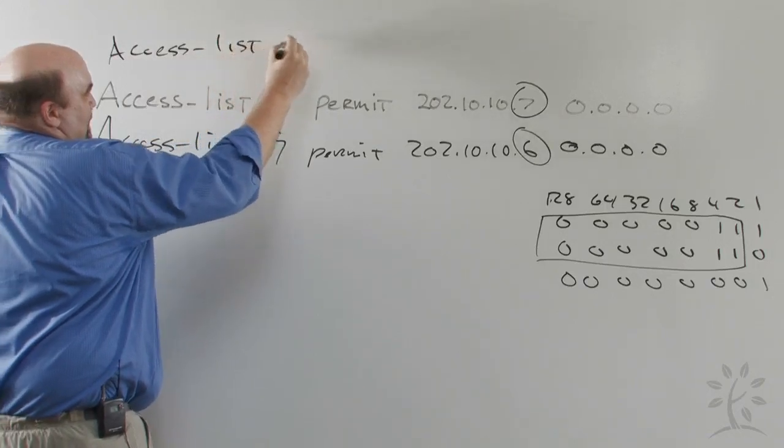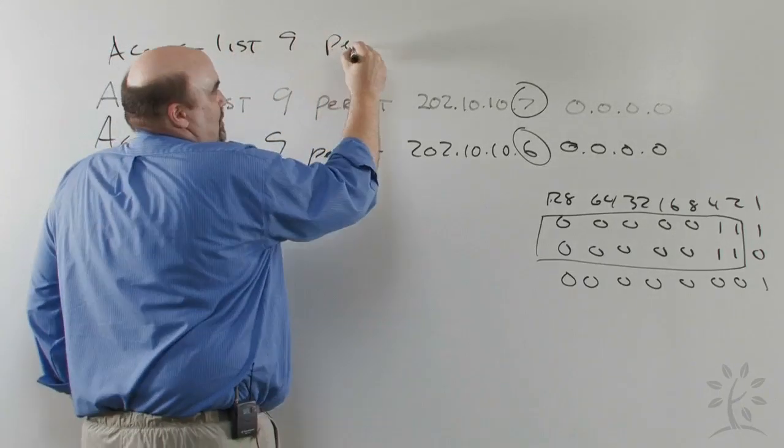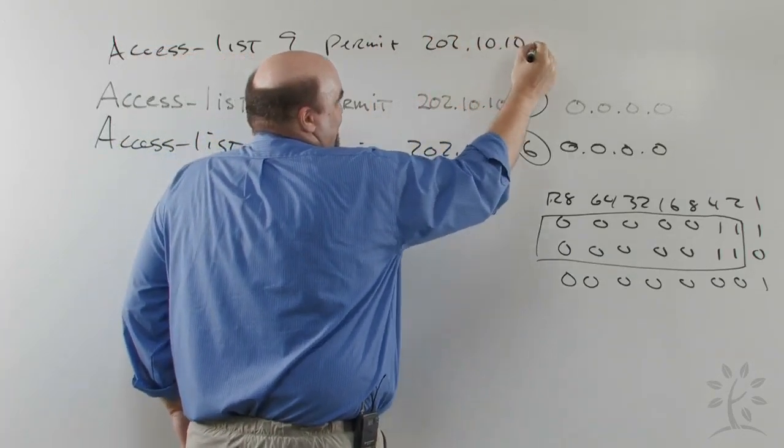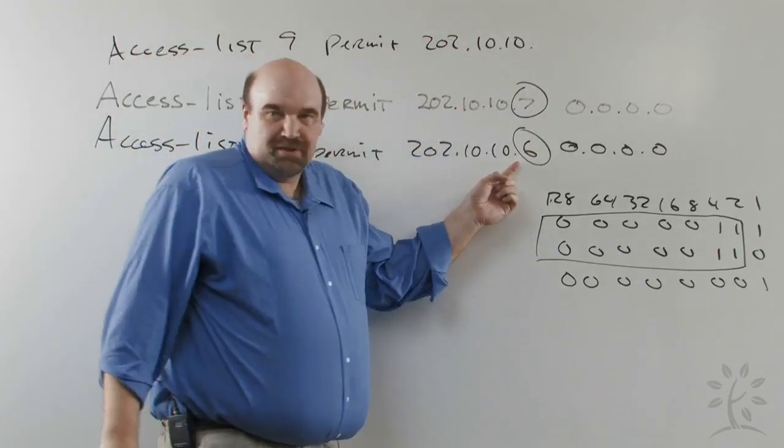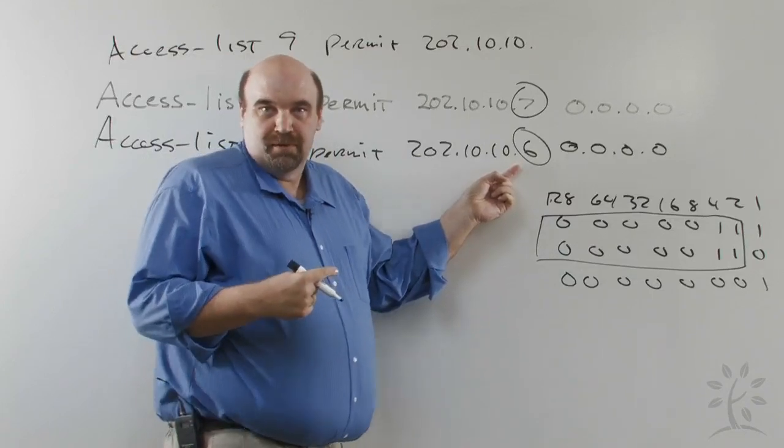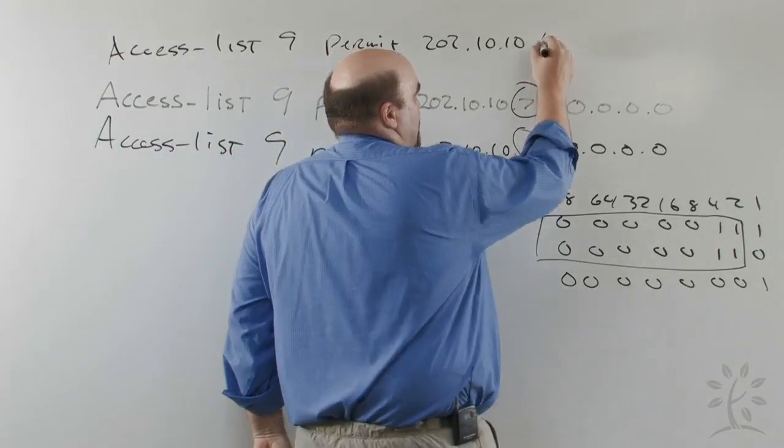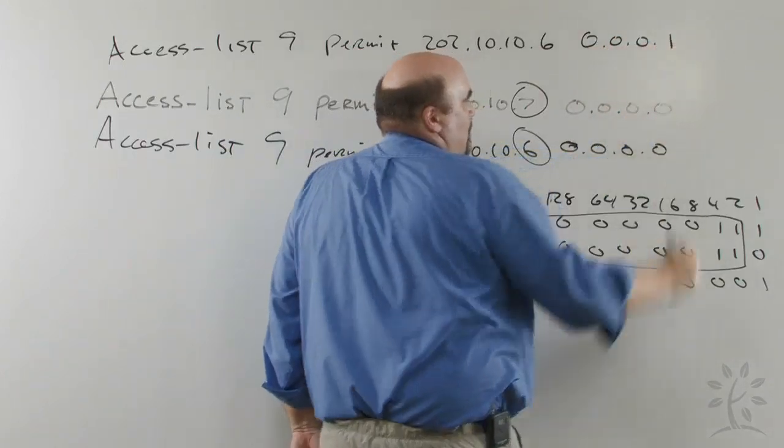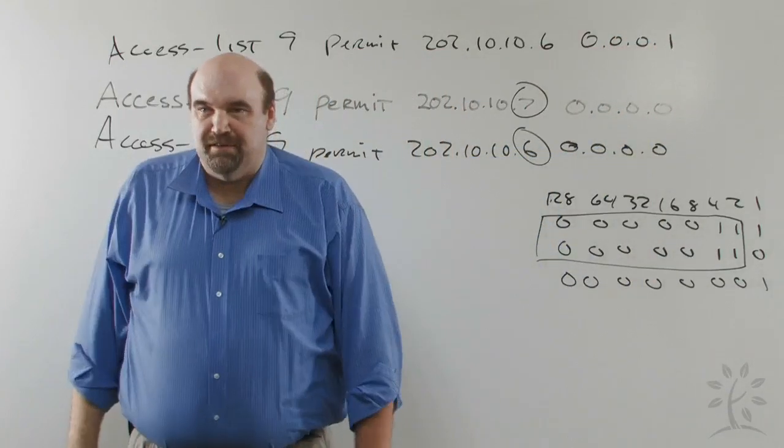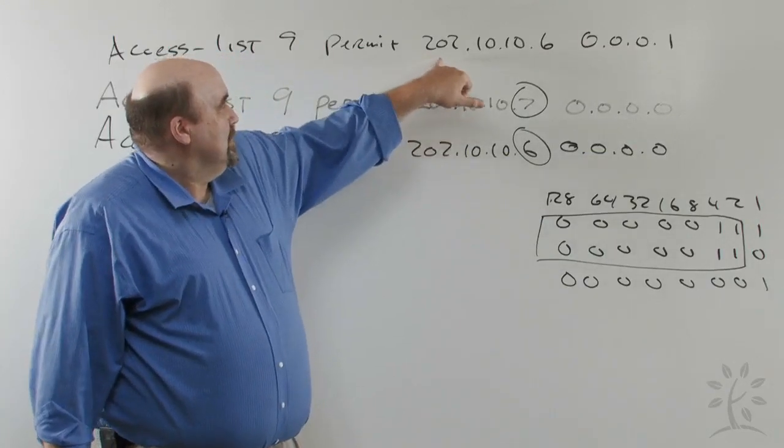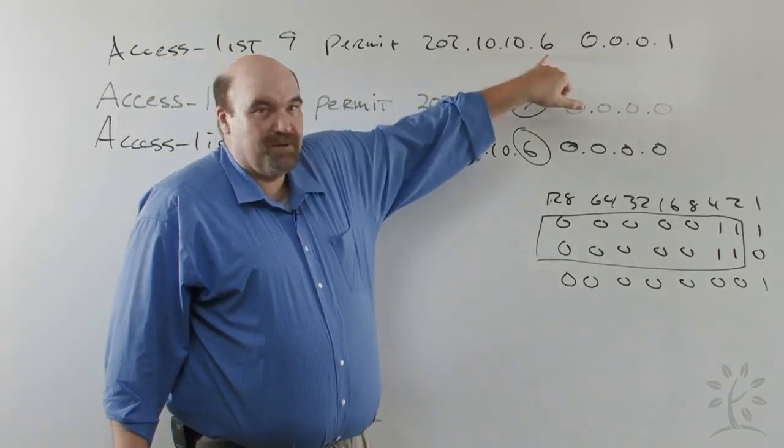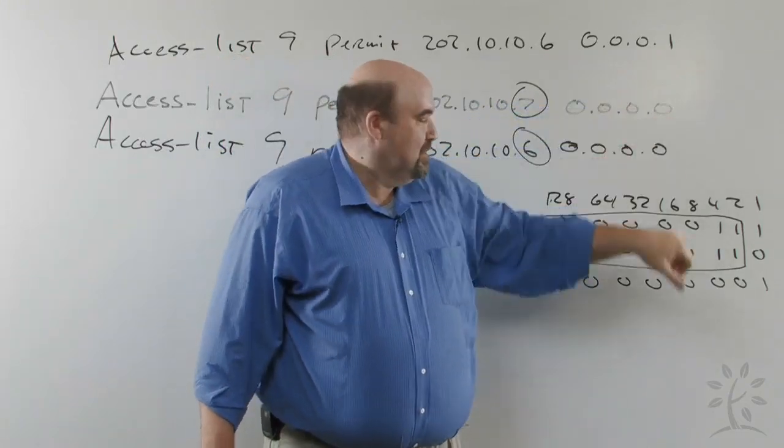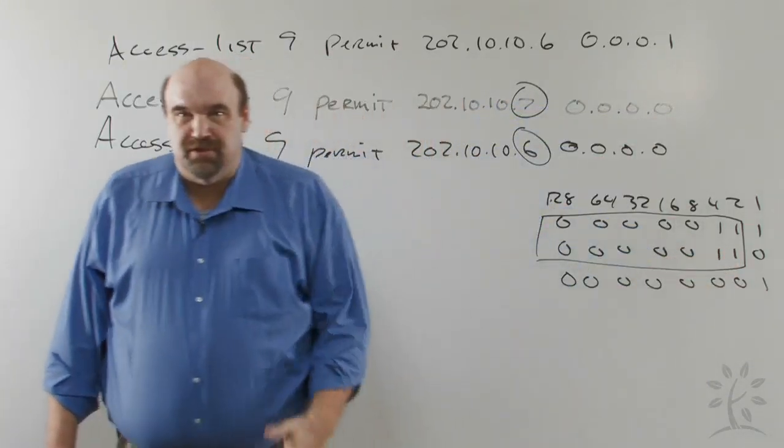So the line now is Access List 9, Permit 202.10.10. Now in this case I can use either one of these numbers because both numbers will allow the match. And the Wild Card Mask, simply counting that 1 bit. So as long as this number is in this group I want to match, this Wild Card Mask will exclude the 1 bit including 6 and 7.